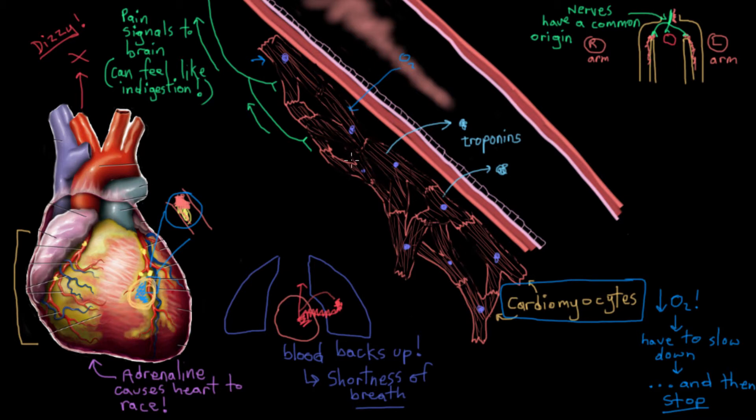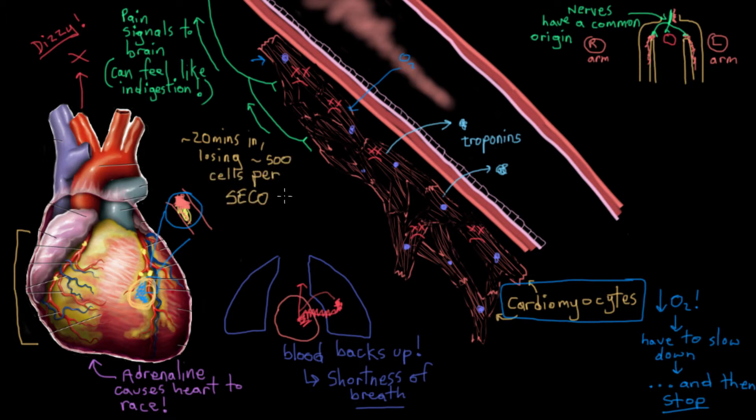Your starving heart muscle cells will actually begin to burst and die. They'll actually begin to escalate from just leaking to actually dying. This is really serious. If you're not treated within about 20 minutes, your heart will get damaged so badly that it won't ever beat normally again. Because at this rate, about 20 minutes after your heart attack comes on, you're losing about 500 cardiomyocytes, 500 heart muscle cells per second.